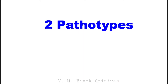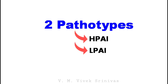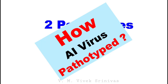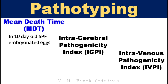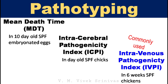Avian influenza viruses are pathotyped based on their virulence into two pathotypes: highly pathogenic and low pathogenic. They are pathotyped using one of the following laboratory methods. Number 1: Mean Death Time — the virus is injected into 10-day-old pathogen-free embryonated eggs and their mean death time is analyzed. Number 2: Intracerebral Pathogenicity Index — the most commonly used method — where the virus is injected into a day-old specific pathogen-free chick and their pathogenicity index is analyzed. Number 3: Intravenous Pathogenicity Index — where the virus is injected into 6-week-old specific pathogen-free chickens and their pathogenicity index is analyzed.